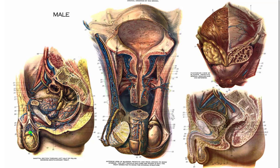The epididymis is the comma-shaped structure that sits above and to the side of each testis. Coming out of the bottom of the epididymis is a single tube that extends upward and runs through the spermatic cord. The spermatic cord is this wrapping around the vas deferens and the blood vessels running to and from the testes.